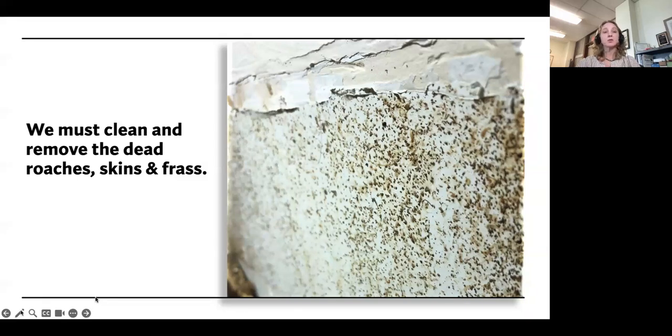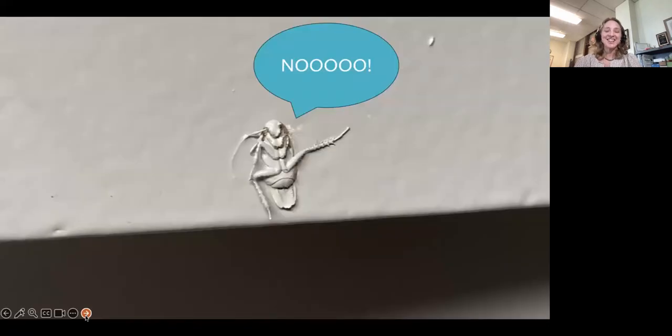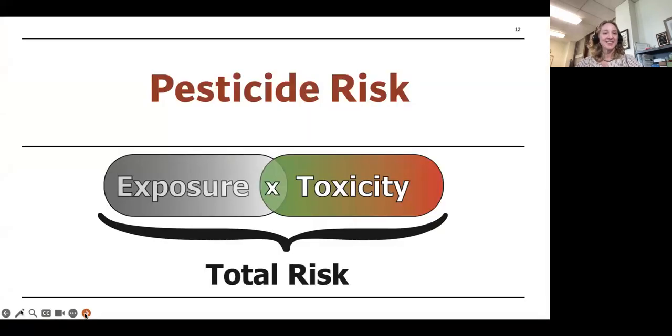Getting back to the other risk is the pesticide exposure. What a lot of people don't understand about pesticide risk is that it's not just how toxic the product is, it's how much we're exposed to it. That is the total risk. For example, these products that we can buy at the grocery store that seem pretty safe, some of these are used in a way that they coat every surface, especially like the bug bombs. Even though these are less toxic products, they are applied in a way that we're becoming more exposed.